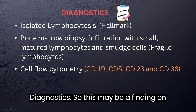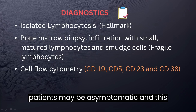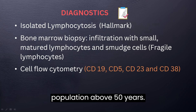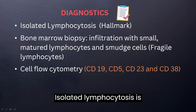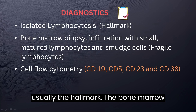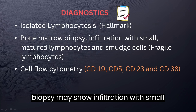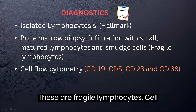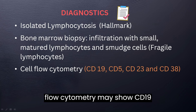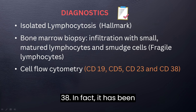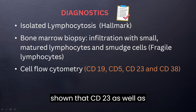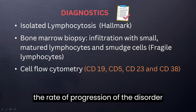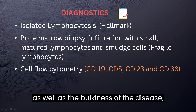For diagnostics, CLL may be a finding on a routine blood workup, meaning patients may be asymptomatic. This disorder usually affects the elderly population above 50 years. Isolated lymphocytosis is usually the hallmark. A bone marrow biopsy may show infiltration with small matured lymphocytes and smear cells — these are fragile lymphocytes. Cell flow cytometry may show CD19, CD5, CD23, or CD38. CD23 as well as beta-2 microglobulin correlate with the rate of progression and bulkiness of the disease.